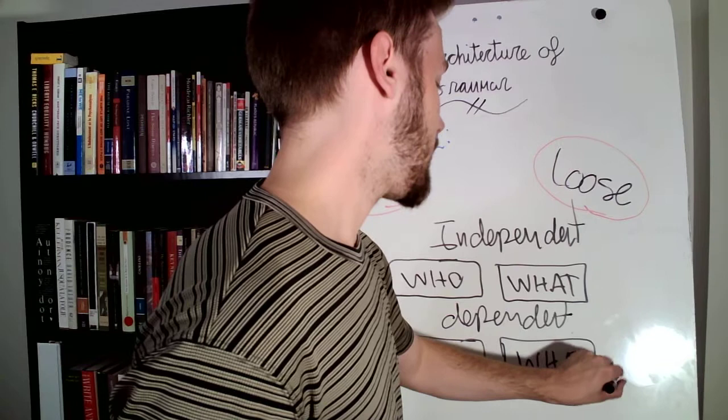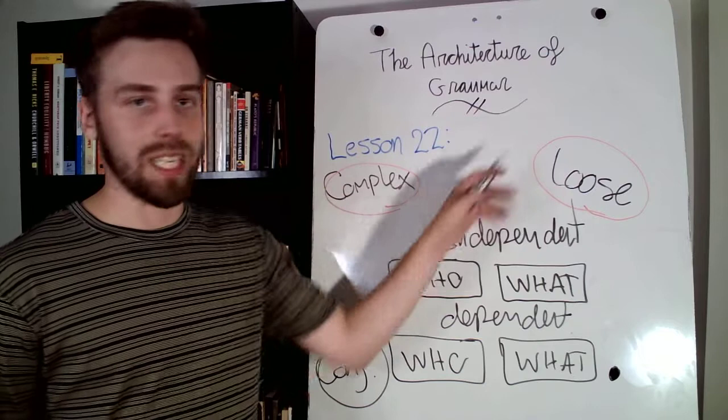So, who, what, conjunction, who, what. And then you, of course, have your period. And that is for your complex sentence, which is a loose sentence. Now, let's talk a little bit about phrases.